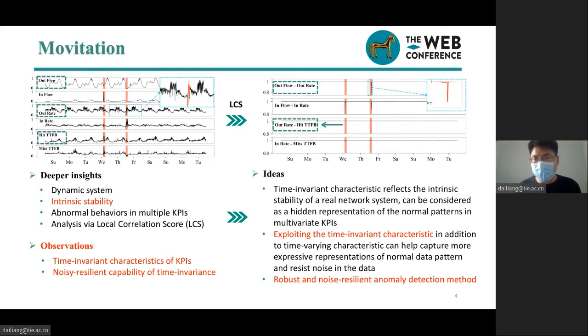To some extent, the observed time-invariant characteristic reflects the intrinsic stability of a distributed network system like CDN, in which different KPIs are constrained by certain time-invariant characteristics of the underlying system. This has not been fully utilized by previous studies and can be considered as hidden representations of known patterns in multivariate KPIs.